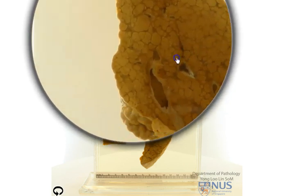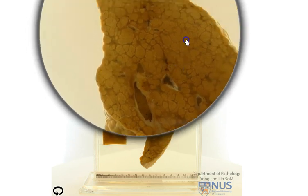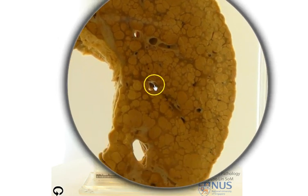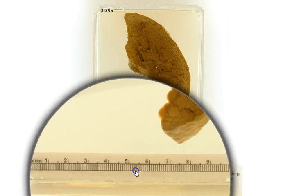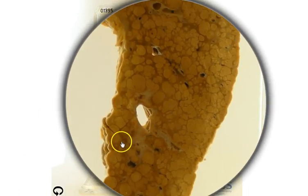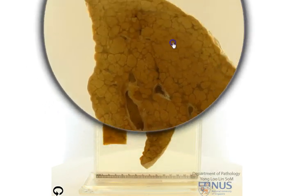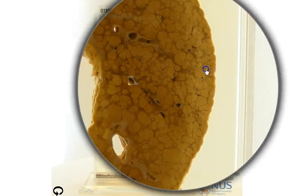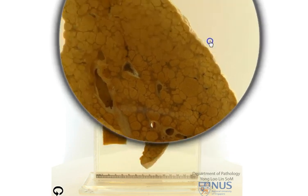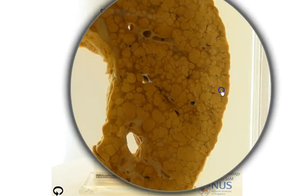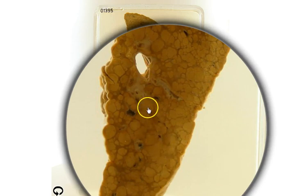Therefore, this is a diffuse process which involves disruption of the architecture of the liver by nodules of varying sizes. These nodules range in size — if you look at the scale down here — from less than 1 cm to roughly a maximum size of about 1 cm. So the entire liver parenchyma appears to be disrupted and replaced by nodules of varying sizes. I do not see any single large mass lesion in the liver. This is an example of cirrhosis of the liver.